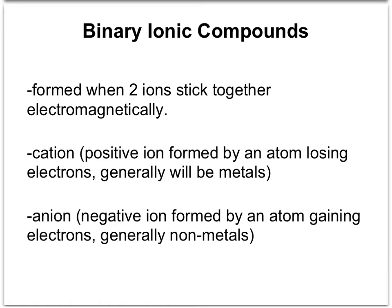The cation is the first part. That's the positive ion formed by an atom losing electrons, and they're generally going to be metals. As you guys recall, metals are the elements that are found to the left of the stair step on the periodic table. The second portion is the anion, which is the negative ion formed by an atom gaining electrons. Generally those are going to be the non-metals, the things found to the right of the stair step.